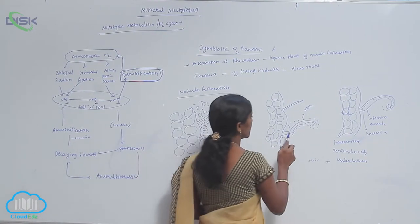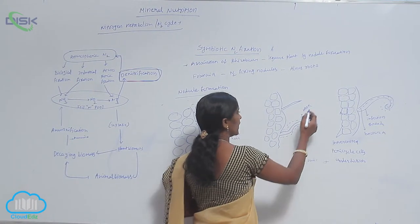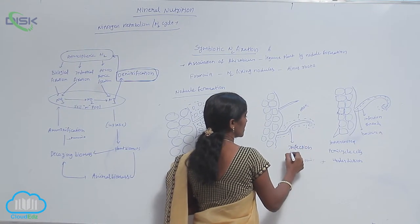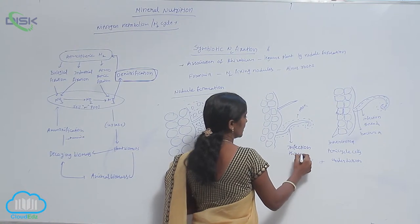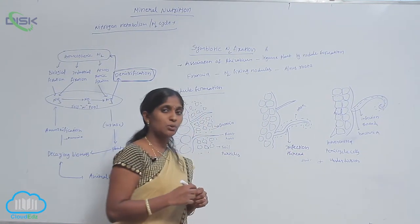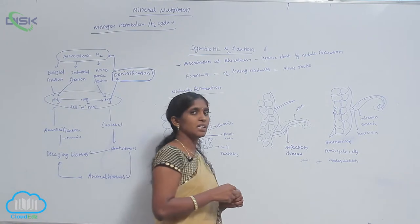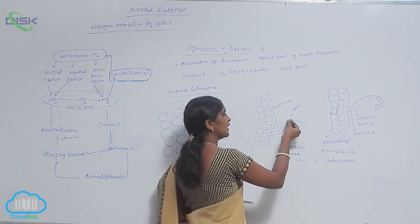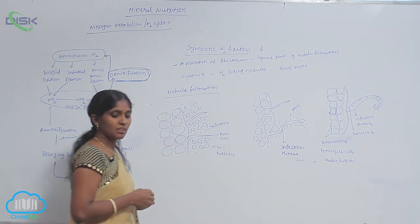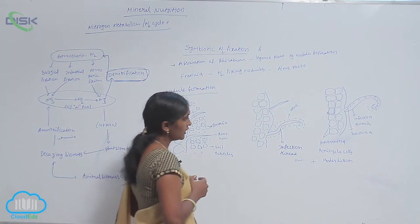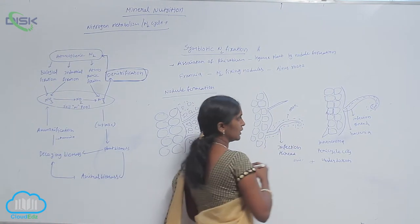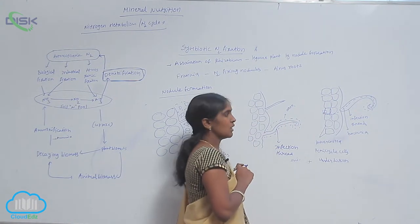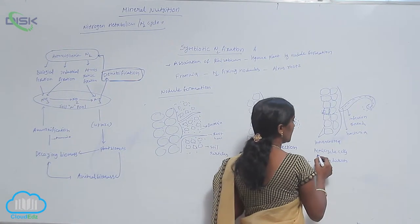Before infection thread formation, the bacteria which are attached onto the root hairs multiply and many colonies are produced. These colonies invade into the infection thread and enter inside the cortex of root cells or pericycle cells.